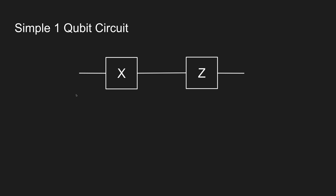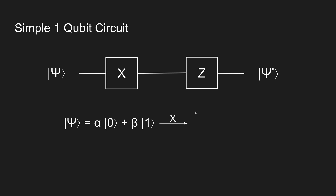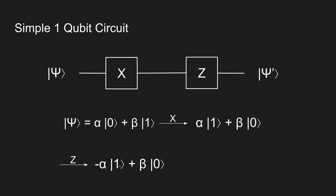Now let's put this more generally. If we put in a quantum state psi and run it through this circuit, what comes out is a slightly different state psi. Psi is represented as the basis states and their amplitudes. Applying the X gate: zero becomes one and one becomes zero. Afterwards this full state goes through the Z gate — the sign of the one state changes but the sign of the zero state does not. This is our new state representation after going through this single qubit circuit.